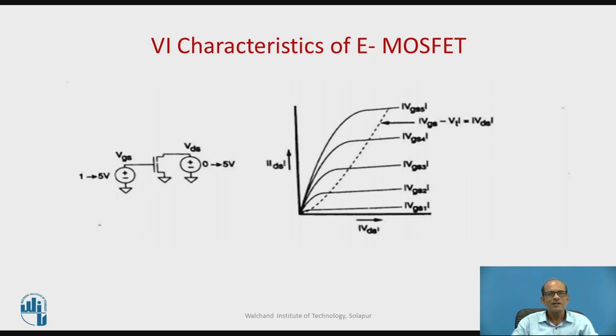This is V-I characteristics of E-MOSFET. The figure shown on the left hand side is the circuit used for simulation. VGS is varied from 1 to 5 volts and between drain and source, VDS varied from 0 to 5 volts.